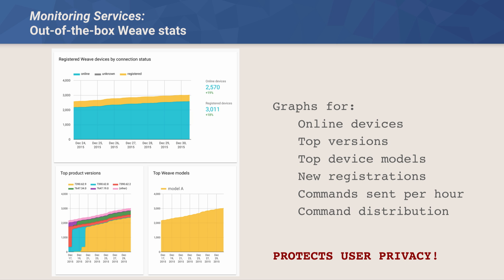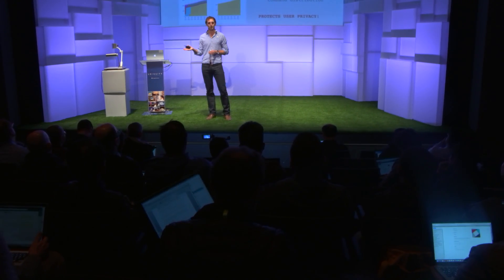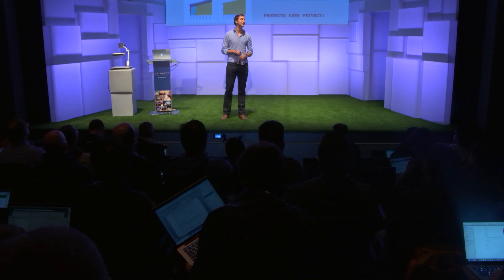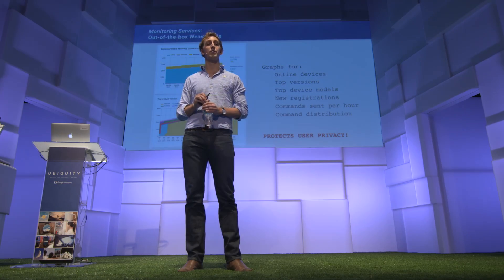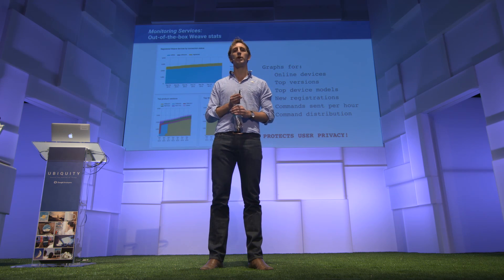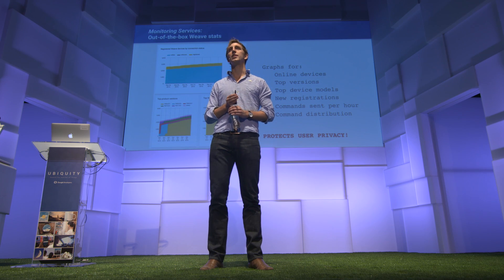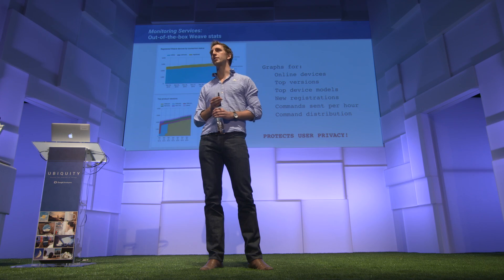The command distribution gives you an idea of how your devices are being used — what sort of commands are being sent and in what proportion. Of course, consumer privacy is very important over these metrics, so we never track a single device, always an aggregation. And for launched devices, there's a 50-device minimum that we track.